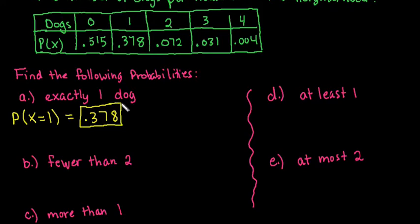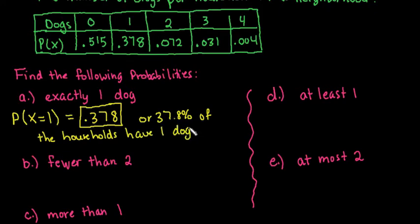The chart tells us that 37.8% or 0.378 of the households had... if you want it as a decimal, you would leave it as 0.378, or you could say that 37.8% of the households have one dog. If you're looking for the probability of randomly selecting a house that has exactly one dog, you have a 37.8% probability of getting that exact outcome.